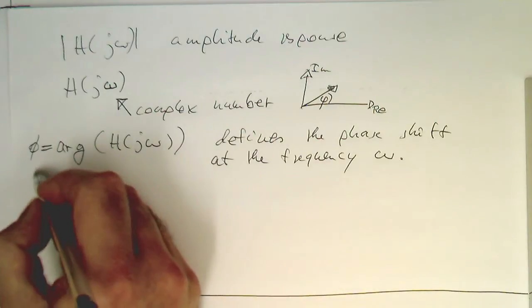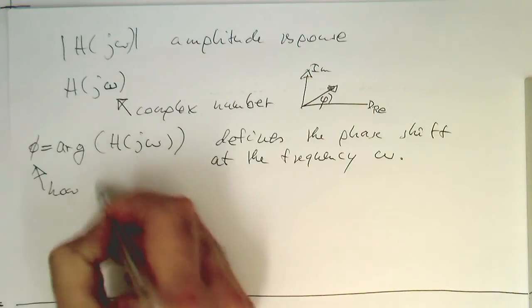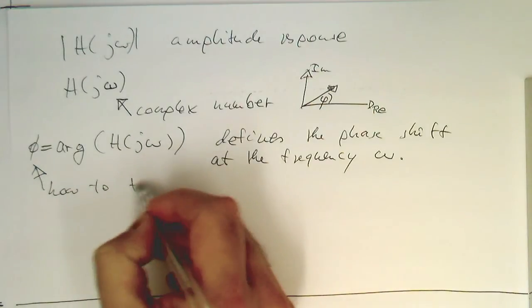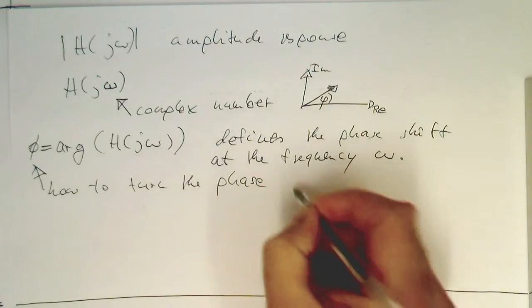So, how do we get the delay out of this phi here? How to turn the phase into a delay?